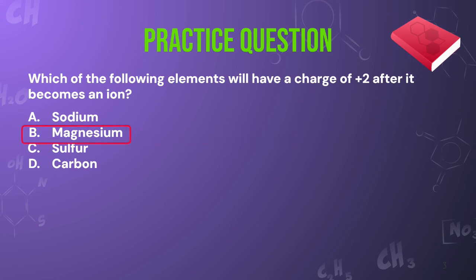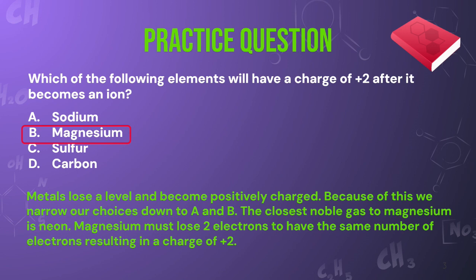I hope you selected magnesium. Firstly, the question states that this ion will have a positive charge. Now, because metals lose a level, they will always be positively charged. Because of this, we can narrow our choice down to only A and B. Those are the only two metals out of the four possible options. Now, the closest noble gas to magnesium is neon. And if you look on the periodic table, you will see that neon is two places away from magnesium. This means magnesium will have to lose two electrons to have the same number of electrons. And this is why it will have a charge of positive 2.